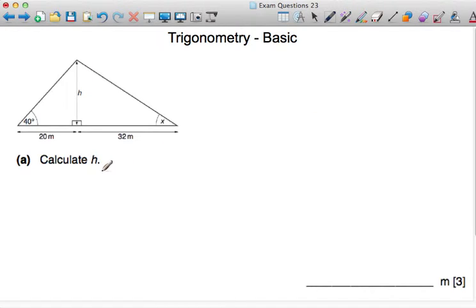In the first part of this question, we're asked to find side h, which belongs to both right-angle triangles—the one on the left and the one on the right. In the one on the left, we know a side and an angle, so we can calculate h. The one on the right, we only know a side, so we couldn't use that to calculate h at the moment.